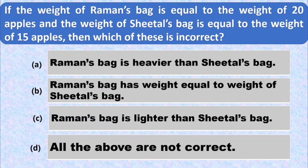The weight of Raman's bag is equal to 20 apples and the weight of Sheetal's bag is equal to 15 apples, and 20 is more than 15. So Raman's bag is heavier than Sheetal's bag. Let's check which option is incorrect. Option A says Raman's bag is heavier than Sheetal's bag — this is correct.